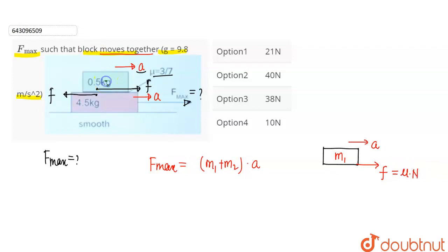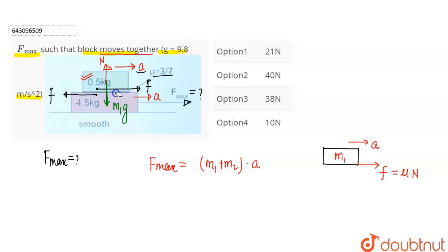The small block, which is M1, has its weight M1 into G acting downward. The big block provides the normal reaction in the opposite direction. So the normal reaction N equals M1 into G. The friction force value is mu into N, which is mu times M1 times G. The normal reaction from the contact surface for the 0.5 kg block is calculated from this.